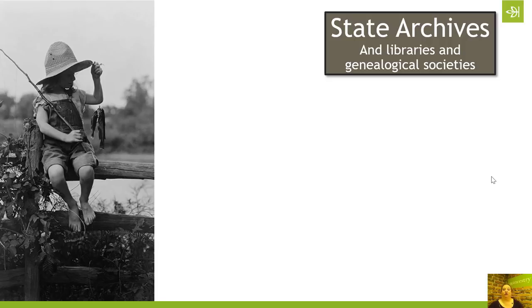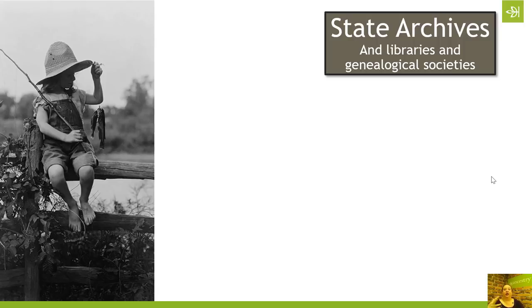I'm just going to walk you really briefly through a process that I use when I'm starting to do research in a new state so that I can understand what records are available online, what records are available online with the archive, and what records are available offline in the archive itself. I'm going to talk about state archives, but really it can apply to state libraries, local libraries, genealogical societies. The same principles apply whether you're researching in a U.S. state archive or whether you're researching anywhere in the world or at any jurisdictional level of other kinds of archives and repositories.